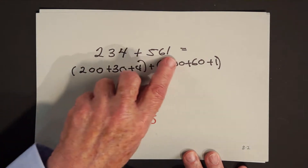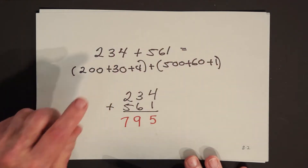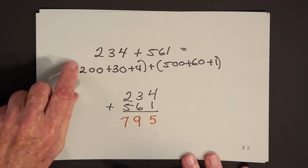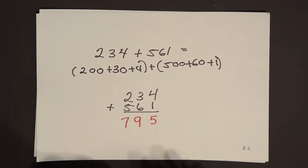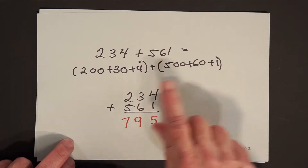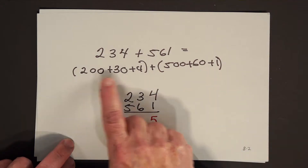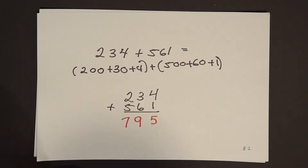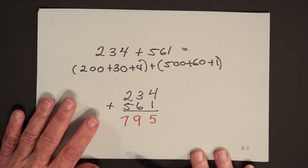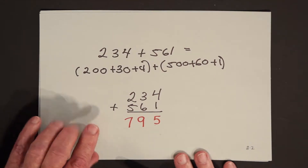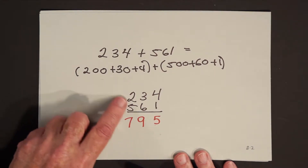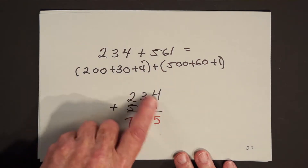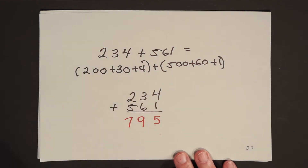But remember, if you view these as tally marks, nothing changes. No matter how you group them — you can group the 4 with the 1, the 30 with the 60, the 200 with the 500 — it always stays the same. So this is the power of being able to visualize the tally marks. What rules did you use here? Nothing more than saying I rearranged the tally marks so I can do it this way.